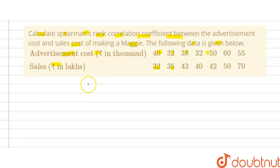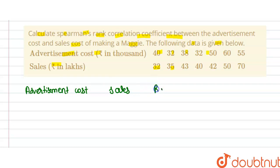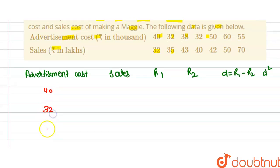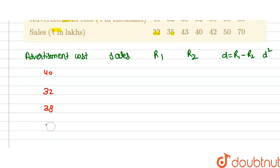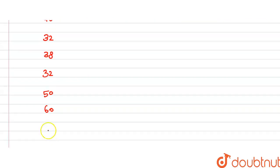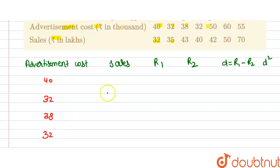First we write the table with columns: advertisement cost, sales, rank one, rank two, and we have to calculate the difference — that is rank one minus rank two — and d square. Advertisement cost values are: 40, 32, 38, 32, 50, 60, and 55.